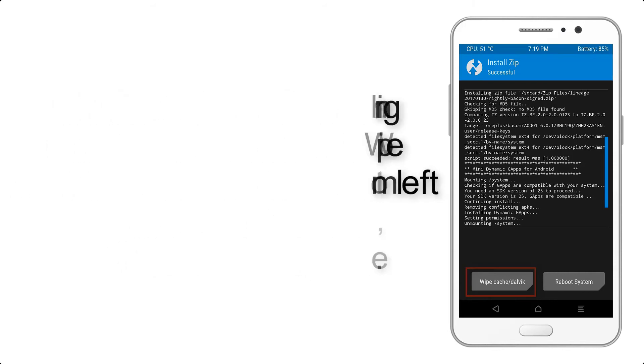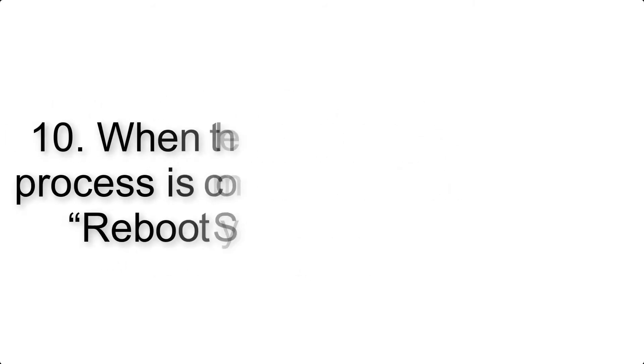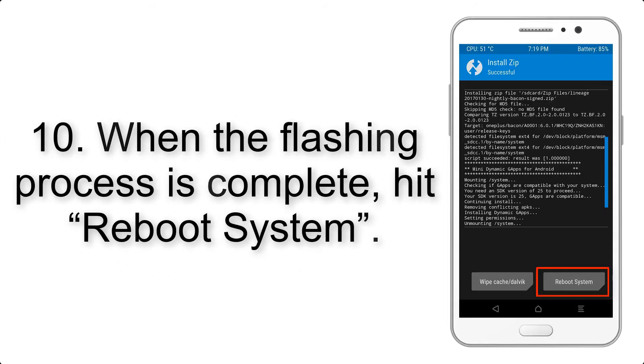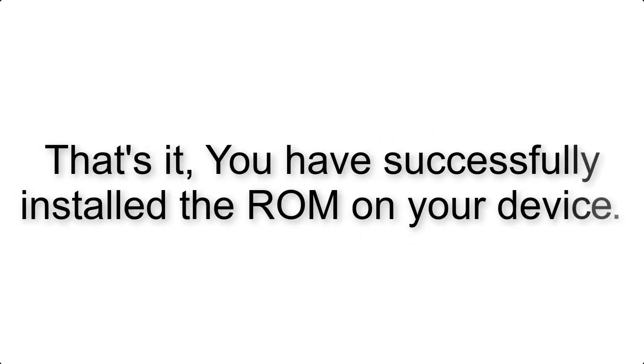Step 9: After gapps flashing completes, select Wipe Cache and Dalvik from the bottom left side of the screen and swipe to wipe. Step 10: When the flashing process is complete, hit Reboot System. That's it — you have successfully installed the ROM on your device.